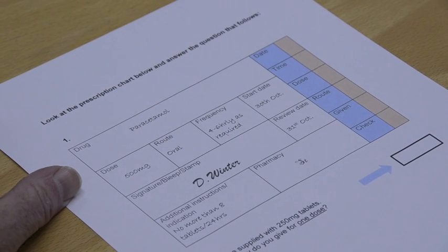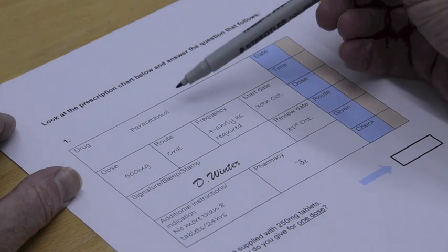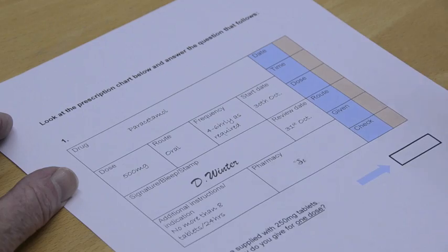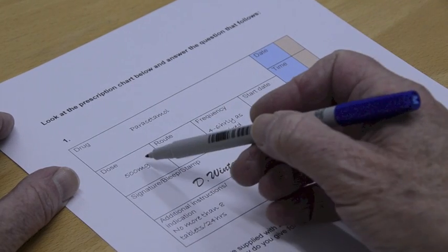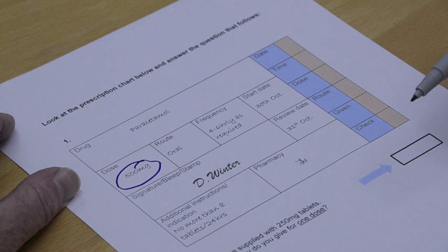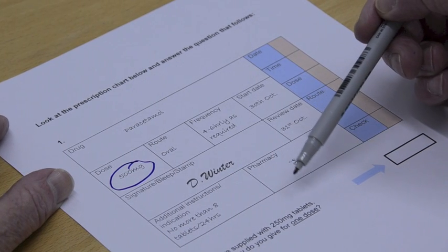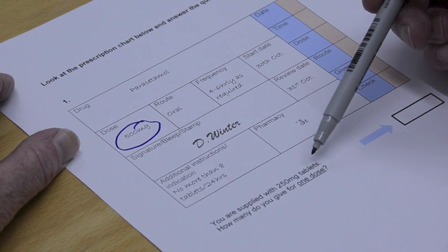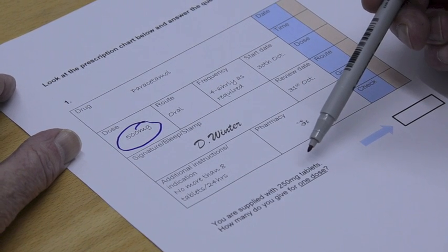Okay, let's start with one of the simpler ones here. Here's a paracetamol which has been prescribed, and we've got here the dose of 500 milligrams. Now, the question we have is, and this is down to the bottom here, you are supplied with 250 milligram tablets. How many do you give for one dose?